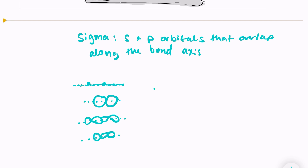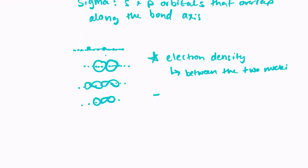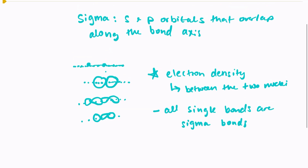One thing to remember is that the electron density, or where the electrons are found, is actually between the two nuclei of the bonded atoms, which is what you would expect. Also, all single bonds are sigma bonds — the orbitals overlap along the axis of the nucleus.